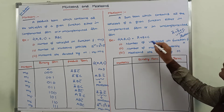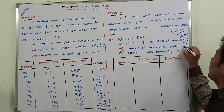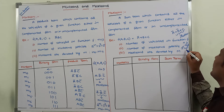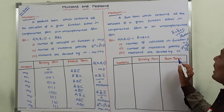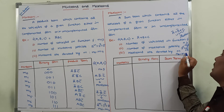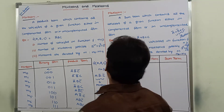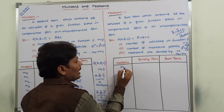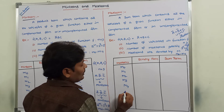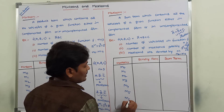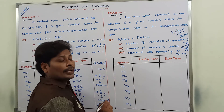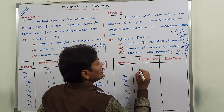The number of variables in function f is 3, so n equals 3. The number of max terms possible is 2 power n, that is 2 power 3, which equals 8 max terms. Max terms are denoted by capital M. So 8 max terms are M0 to M7: M0, M1, M2, M3, M4, M5, M6, M7. In the suffix, the integer is represented in 3-bit binary form because n equals 3.